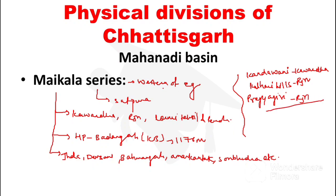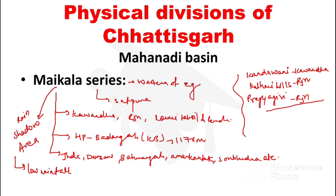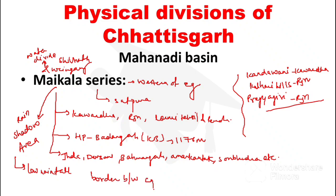Kavardha district falls in a rain shadow area, meaning it receives very low rainfall. The Mekal Range acts as a water divide between the Shivnaath and Wainganga rivers. It also forms a border between Chhattisgarh and Madhya Pradesh, specifically in the Mandla area.